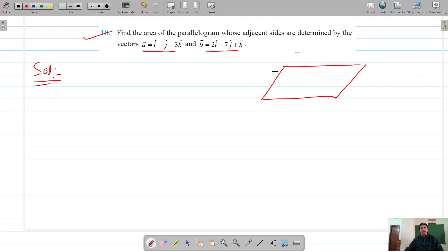We have vertices A, B, C, and D. This is our vector a and this is our vector b. We already know that if we focus on this vertex and try